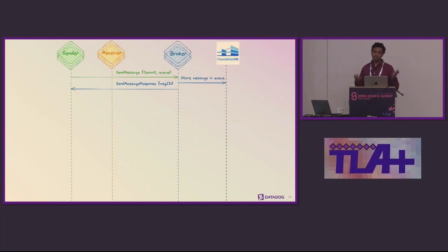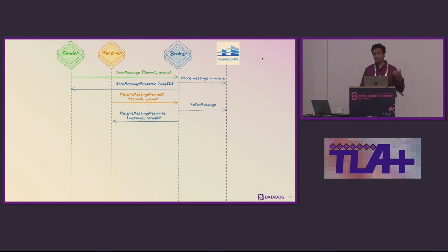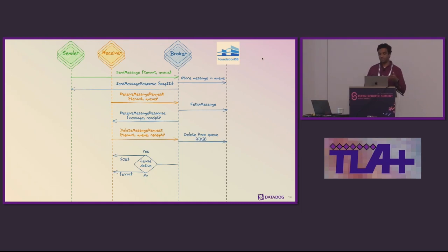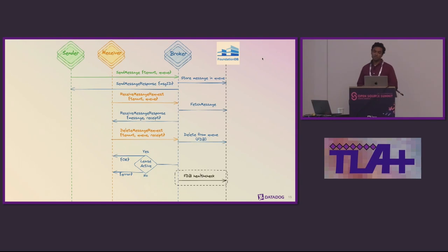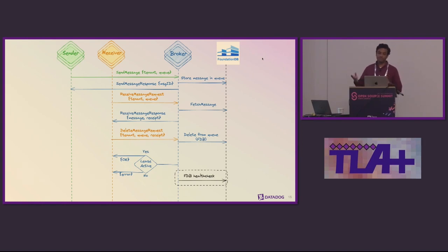We also had a variable that tracked statistics in the model, and some of our properties were defined using this variable, plus some variables to enable communication between processes. The sequence diagram shows: a sender sends a message to the broker, the broker writes it to FoundationDB and returns a response; then a receiver sends a receive request, the broker fetches a message from FoundationDB and returns it; then a delete-message request causes the broker to delete the message from FoundationDB if a lease is active, otherwise it returns an error; and finally, brokers perform health checks on FoundationDB.